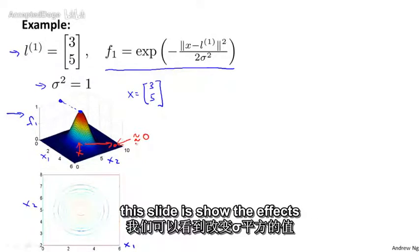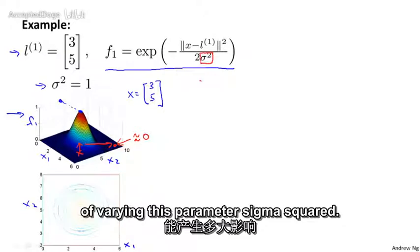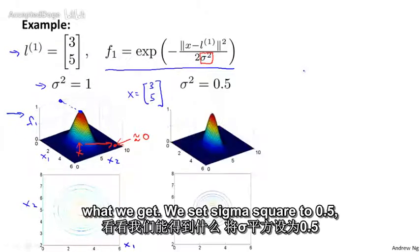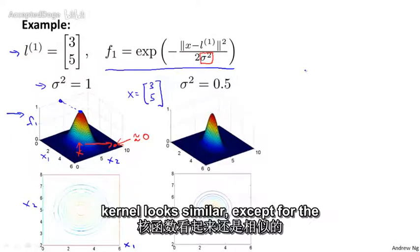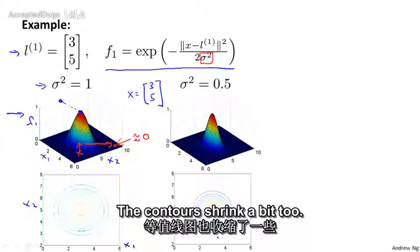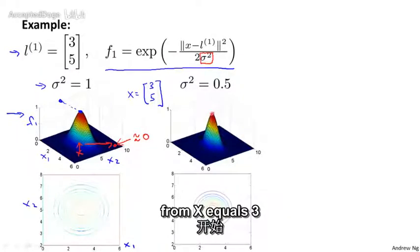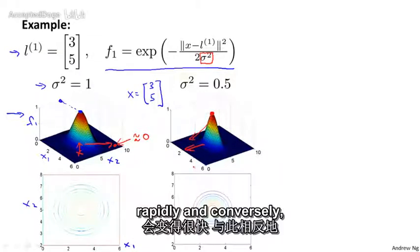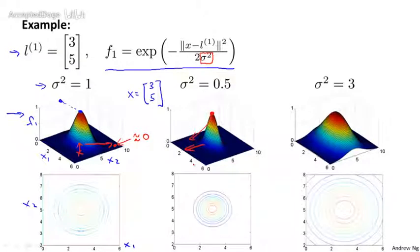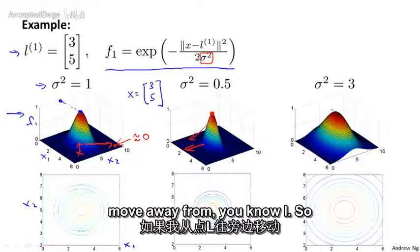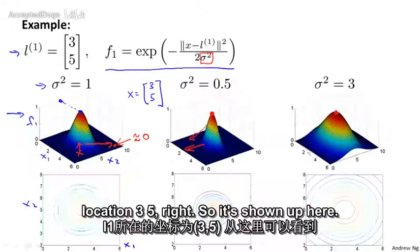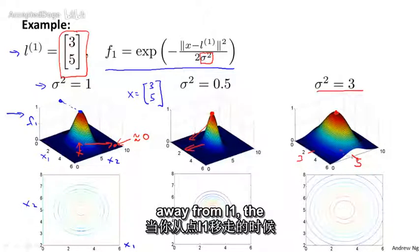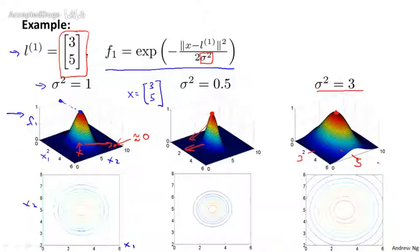The other thing I want to show is the effect of varying sigma squared, which is a parameter of the Gaussian kernel. If we set sigma squared to 0.5, the kernel looks similar except that the width of this bump becomes narrower — the contours shrink a bit. So as you start from x equals 3, 5 and move away, the feature f one falls to zero much more rapidly. Conversely, if you increase sigma squared — say sigma squared equals 3 — then as you move away from l one, the value of the feature falls away much more slowly.